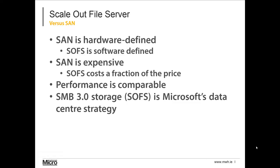Where the SAN is expensive, the Scale-Out File Server costs a fraction of the price, and that price differential is more evident as you scale up. Performance is comparable — there's plenty of information published by Microsoft and third parties showing how well Storage Spaces and a Scale-Out File Server can perform. SMB3 is Microsoft's strategic data protocol in the data center, used not only for the Scale-Out File Server but also for deployment by Virtual Machine Manager and live migration within Hyper-V. SMB3 is the future, and software-defined storage is also the future of the data center.